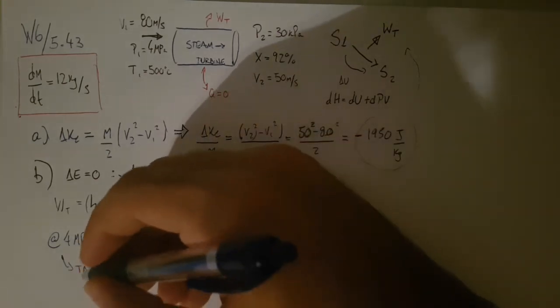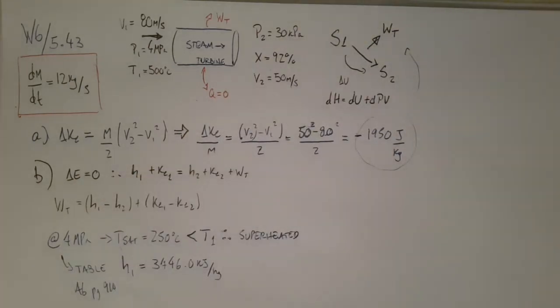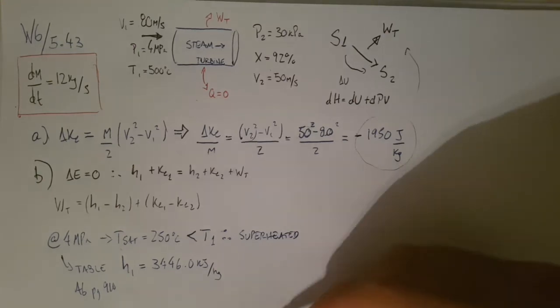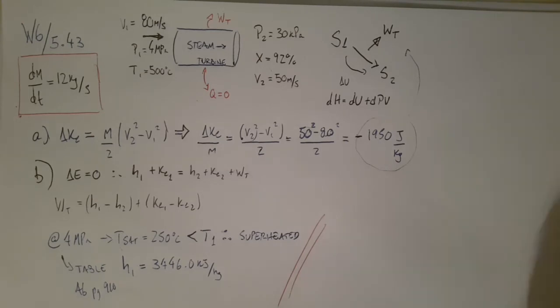So that's going to give me 3446 kilojoules per kilogram. Okay, so this is table A6, page 910. Cool. And then the other thing we're missing is now H2.